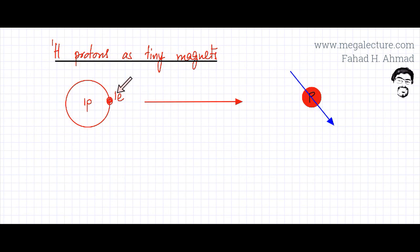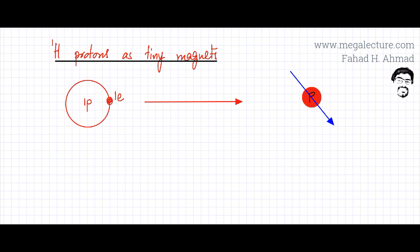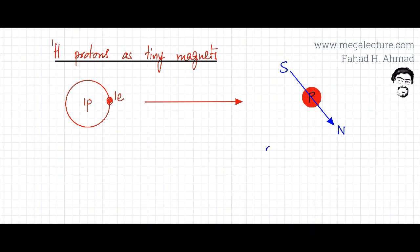Let's ignore the outer electron for a moment and focus on the nucleus of hydrogen, which only has a proton. Each proton or neutron in the nucleus has an accompanying magnetic field. This blue line shows the magnetic field direction, so there's going to be a north pole and a south pole. Not only does a proton have a charge, but it also has a magnetic field, which is known as the magnetic spin moment.